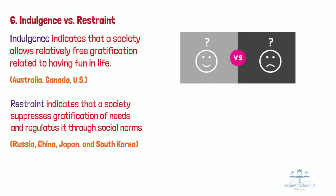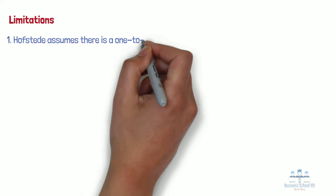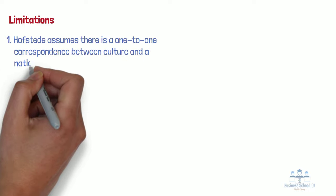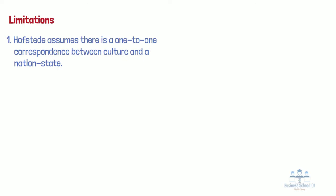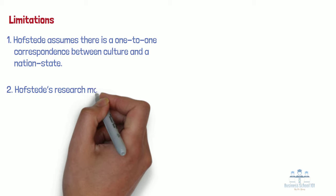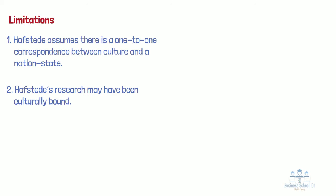Although Hofstede's cultural framework is very useful, it also suffers some limitations. Here are the three major restrictions. First, Hofstede assumes there is a one-to-one correspondence between culture and a nation-state. But as we all know, many countries have more than one culture, especially in countries with multiple ethnic groups. Hofstede's model does not capture this distinction. Second, Hofstede's research may have been culturally bound. The original research team was only composed of Europeans and Americans, and the questions they asked IBM employees and their analysis of the answers may have been shaped by their own cultural biases and concerns.